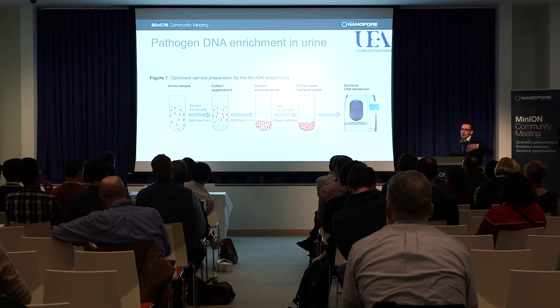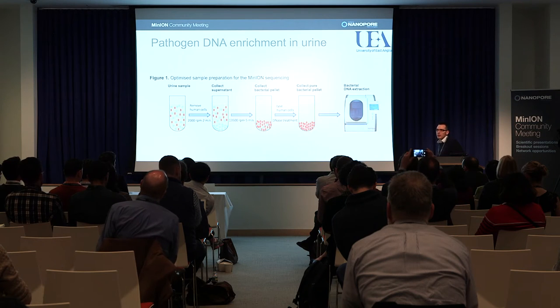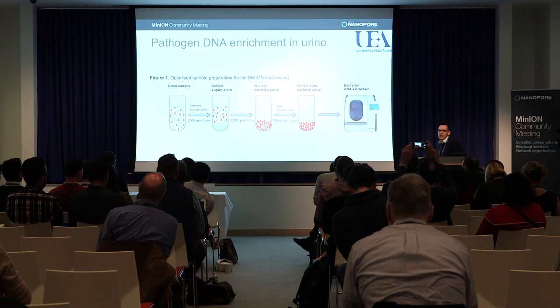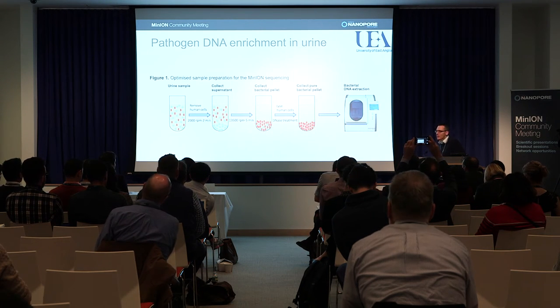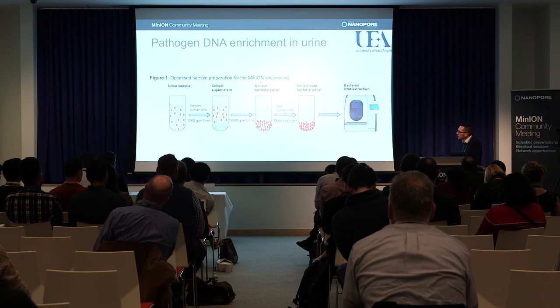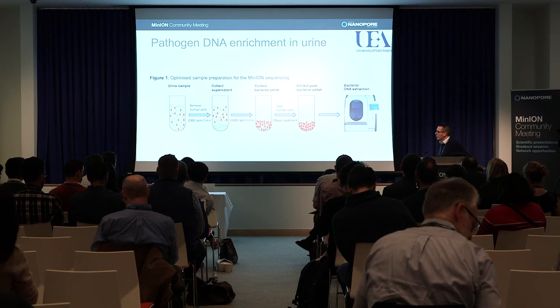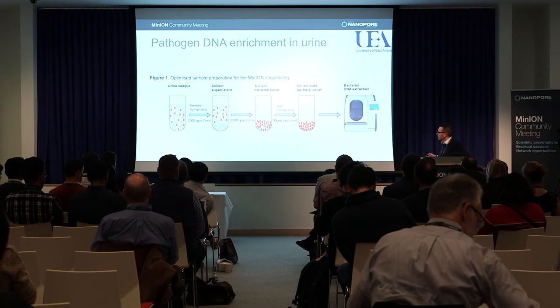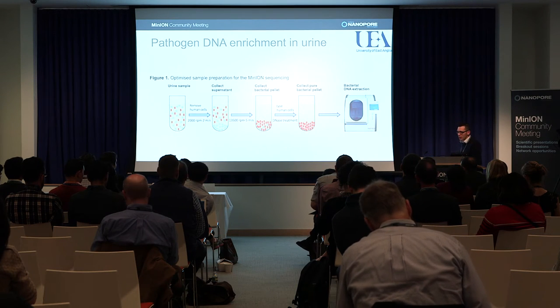But it depends how heavily contaminated it is with human cells, and if it is heavily contaminated you really have to do another step. What we do then is add a differential lysis solution — we lyse the rest of the white cells that are there, and DNase-treat all that lysed human DNA. Then we're left with a bacterial pellet effectively, and we extract the DNA from that and go on to do our sequencing.